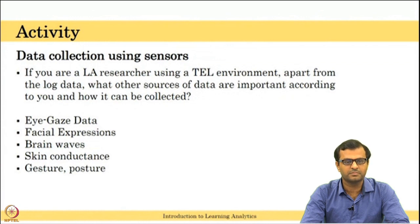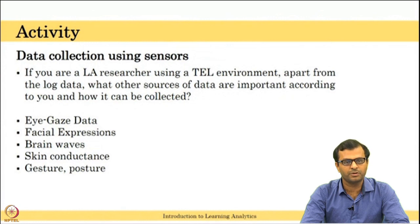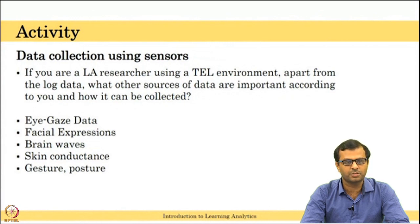However, brain wave and skin conductance devices may not be cost effective and are not scalable to a large class. For gesture and posture, you can have an external video camera recording the students' gesture and posture and code it manually after the study, or you can use pressure-sensitive chairs, pressure-sensitive mouse, or keyboards to collect gesture and posture data.